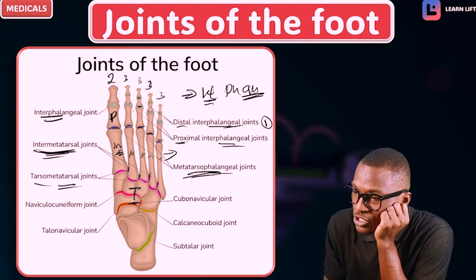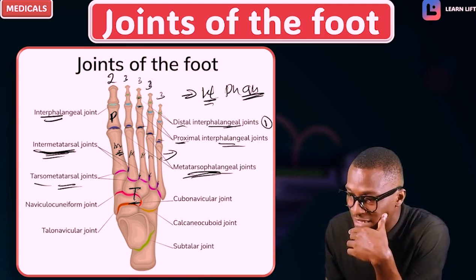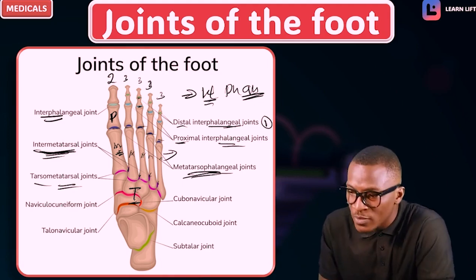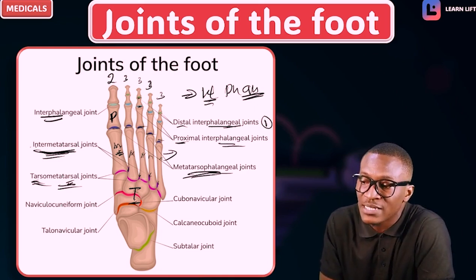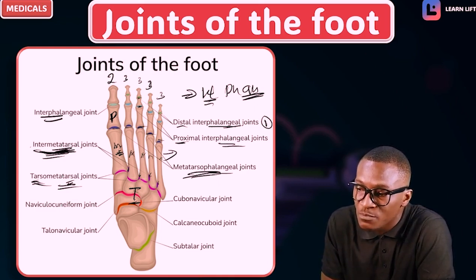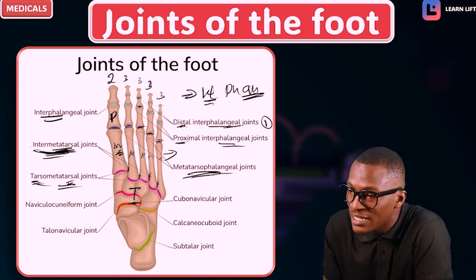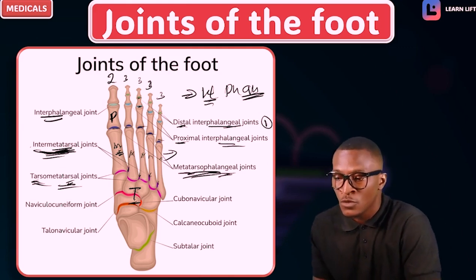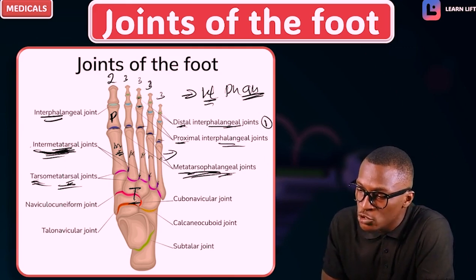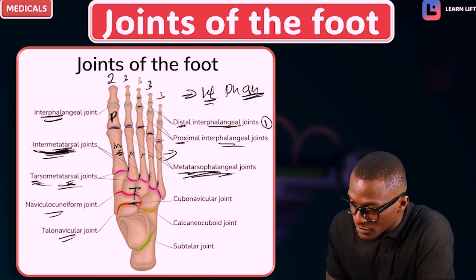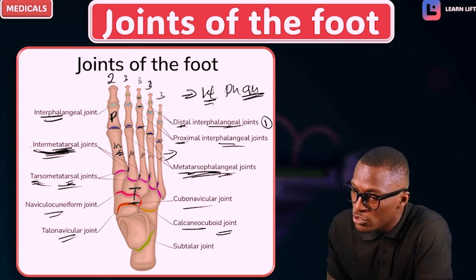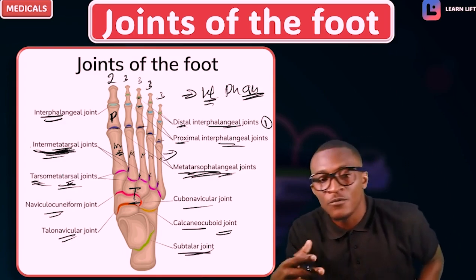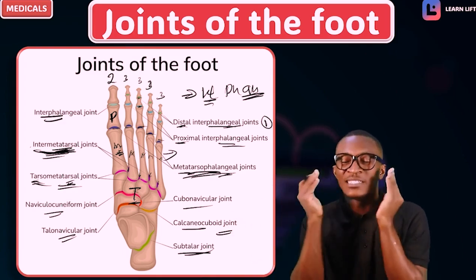The phalanges have their joints. The metatarsals have their joints. The tarsals have their joints — that joint between tarsals and metatarsals is the tarsometatarsal. Inter-metatarsal is between the metatarsals. Inter-phalangeal is between the phalanges. We also have the naviculocuneiform joint — between the navicular and the cuneiform — the talonavicular joint between the talus and navicular, the naviculo-cuboid joint, the calcaneal cuboid joint, and the subtalar joint. We are just giving the overview of these joints.